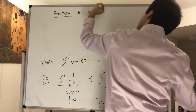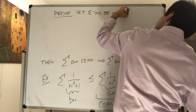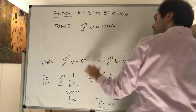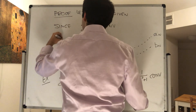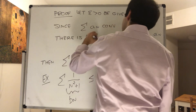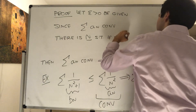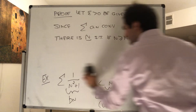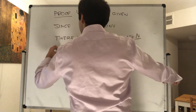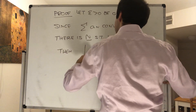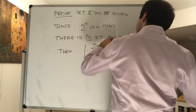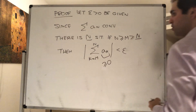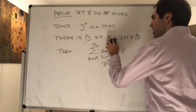Proof. Let epsilon be given. Since the series of a_n converges, we know that the tail of a_n is very small. So there is some threshold capital N, such that if n is bigger than m, both bigger than that threshold, then the tail of a_n is very small — so the absolute value of the sum from m to n of a_k is less than epsilon. Remember those terms are greater than or equal to zero, so we can remove the absolute value since we're just summing positive terms.